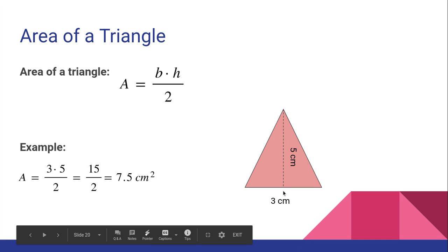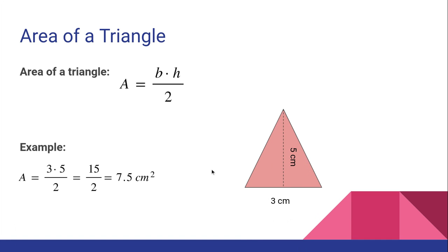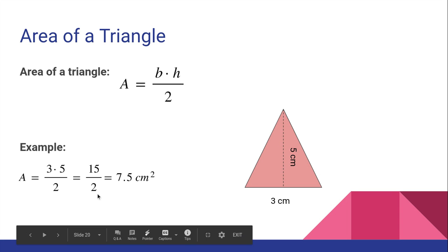So on this triangle, our base is three and our height is five. So here's our formula base times height divided by two. So we're going to do three times five, which is 15. And then 15 divided by two is 7.5 centimeters squared. We're still dealing with area. So we're going to make sure we label it squared.